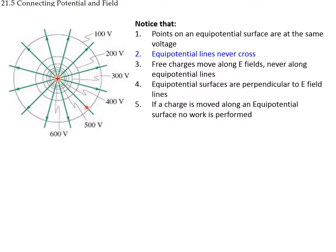We can represent different equipotential lines corresponding to high and smaller potentials — the innermost circle is at 600 volts and the outermost circle is at 100 volts. The potential does not decrease linearly; it goes down very fast and then more slowly.